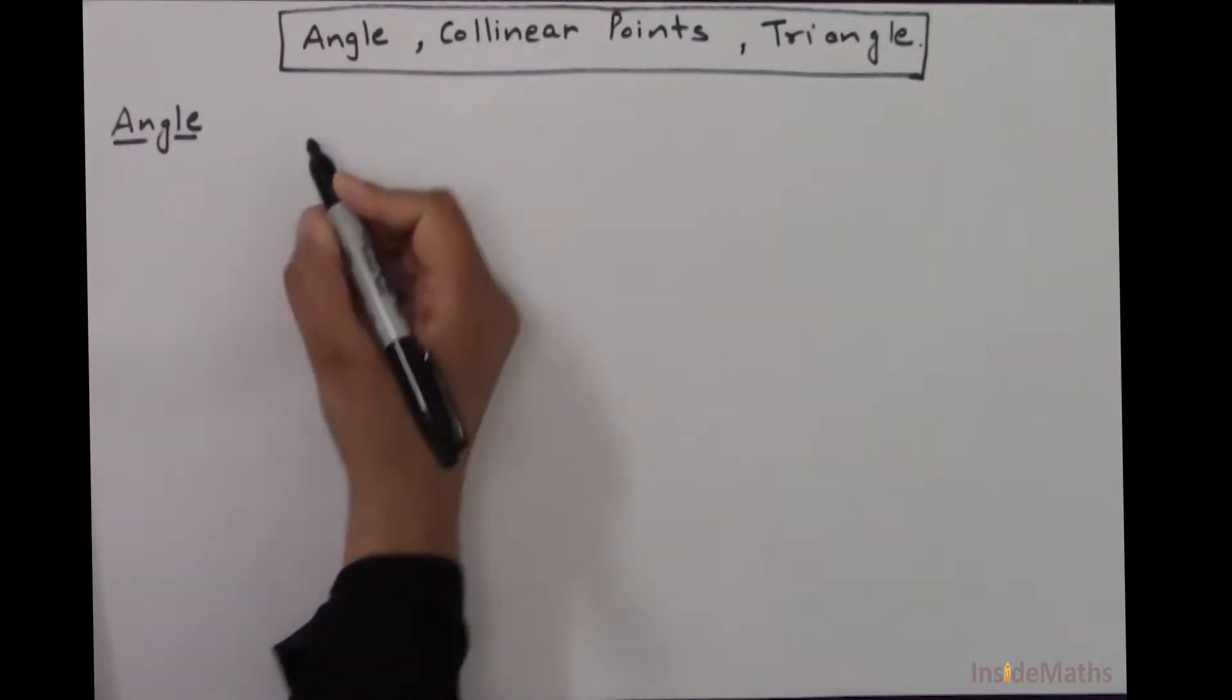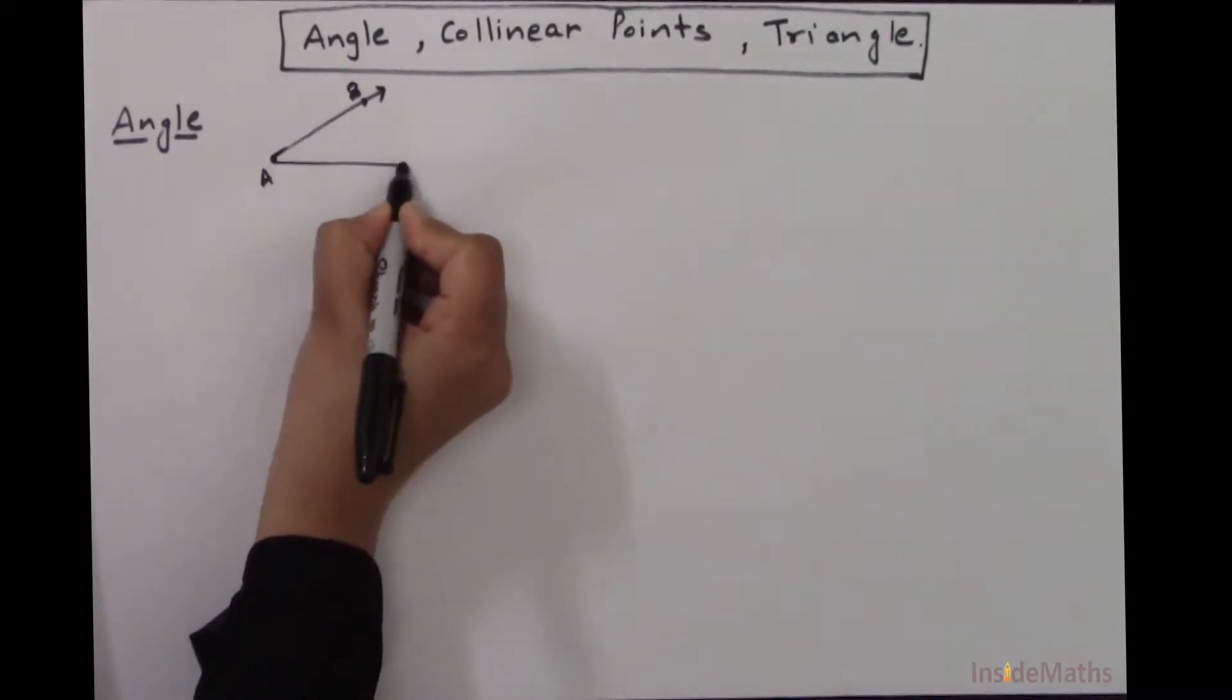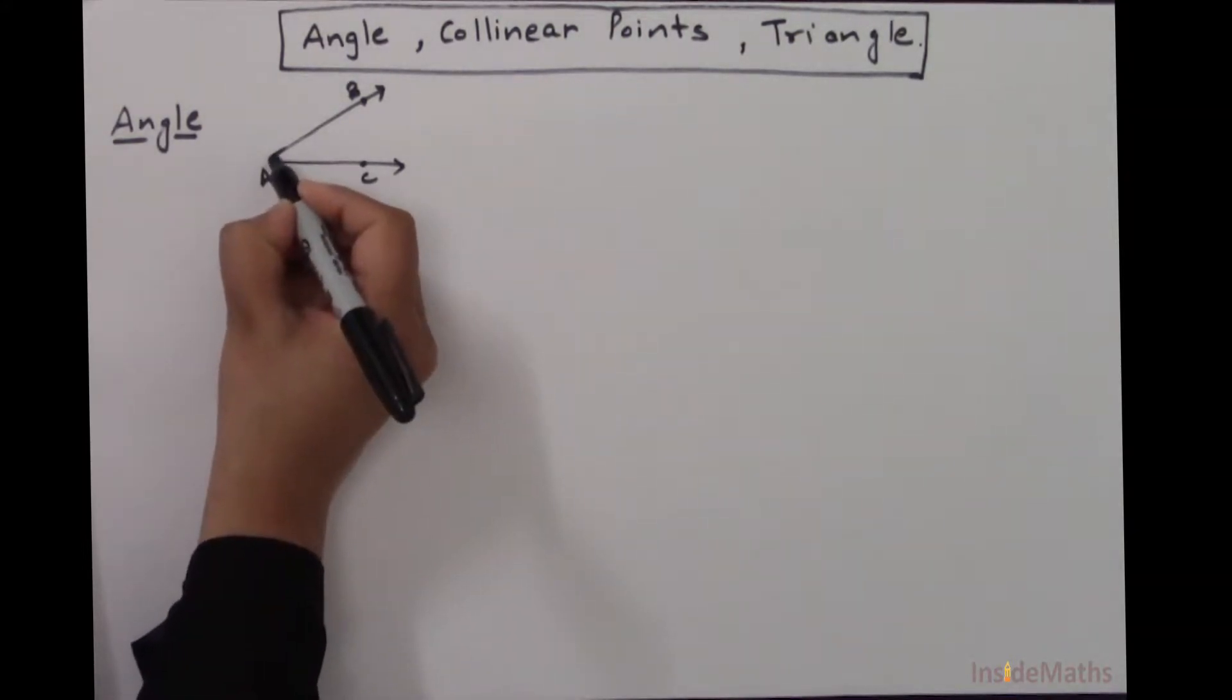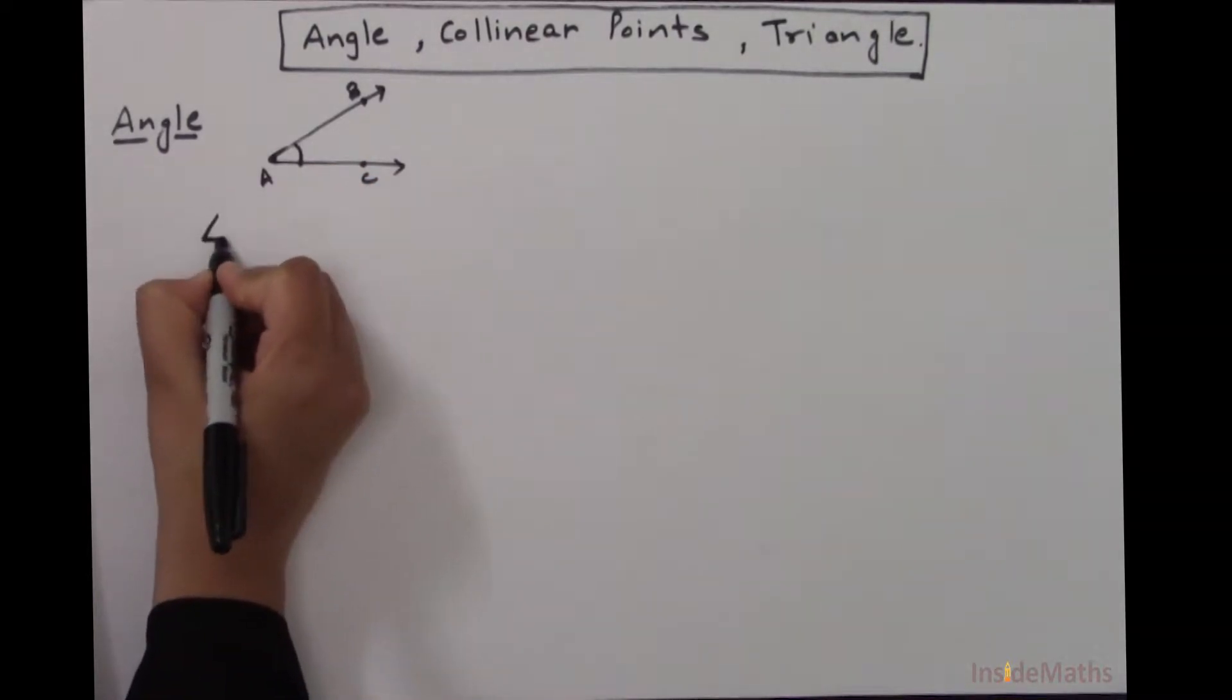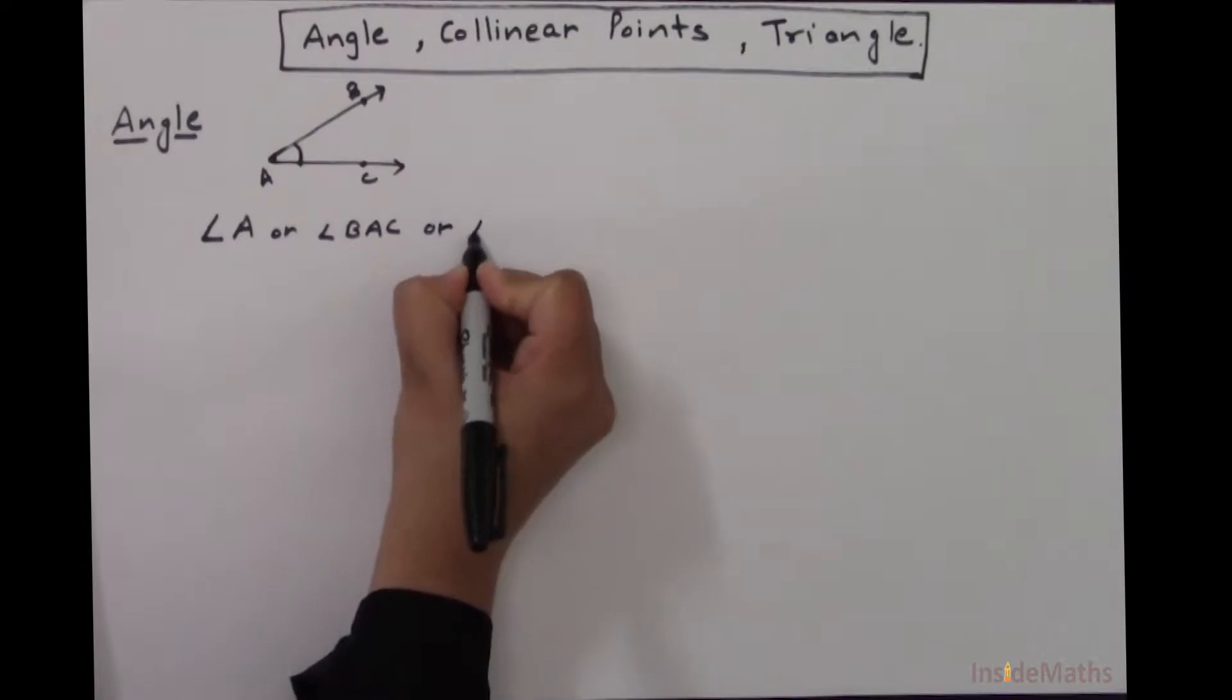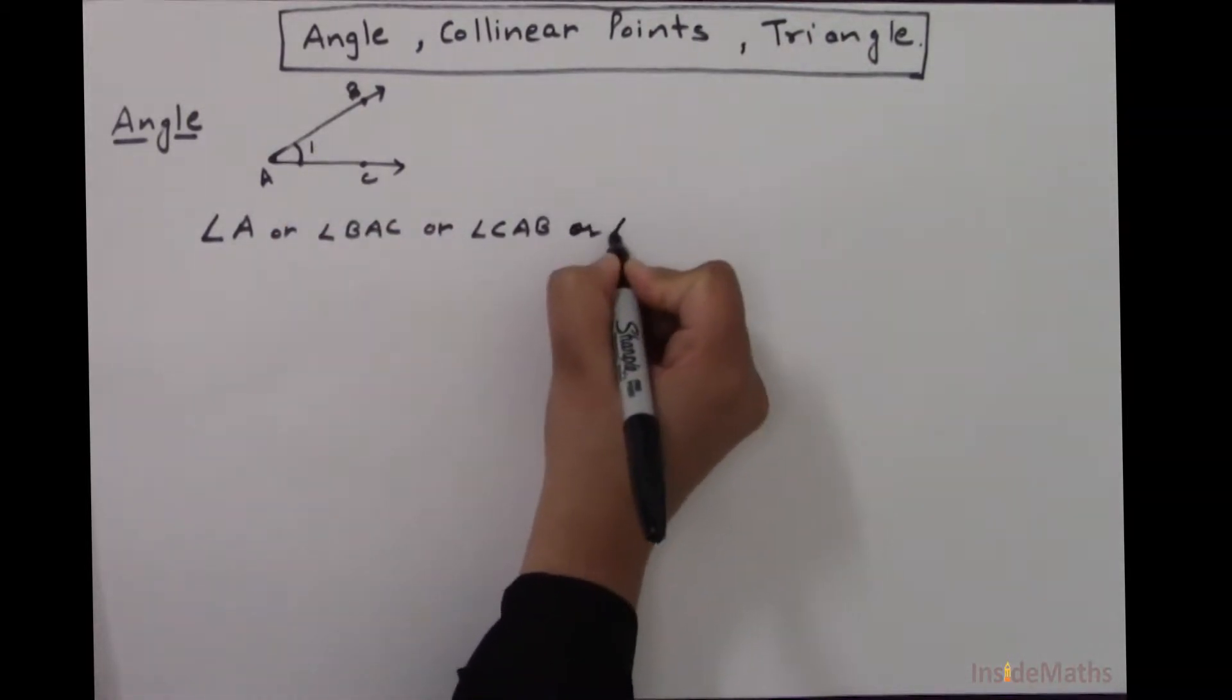So let's say this is ray AB, and this is ray AC. Now if these two rays have a common endpoint, then there will be an angle. And we write it as angle A, or angle BAC, or angle CAB, or if I give it a number one, I can write it as angle 1.